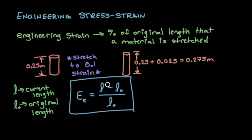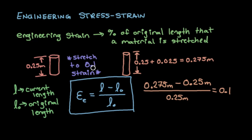And we can see that this pretty much checks out. So we'll plug it in backwards here. Our current length would be 0.275 meters minus our original length, which was 0.25 meters, divided by our original length. And we find that this equals 0.1, which was the strain that we started with. So let's see why this is important.